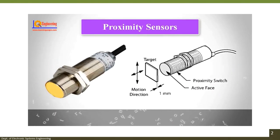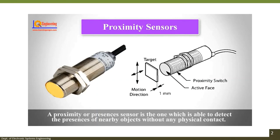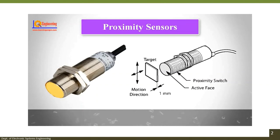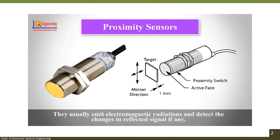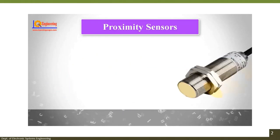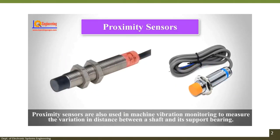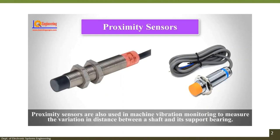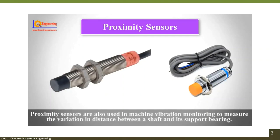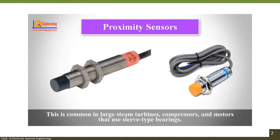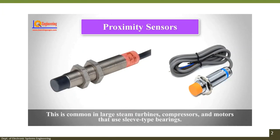A proximity sensor is able to detect the presence of nearby objects without any physical contact, by emitting electromagnetic radiation and detecting changes in the reflected signal. Proximity sensors are also used in machine vibration monitoring to measure the variation in distance between a shaft and its support bearing, common in large steam turbines, compressors, and motors using sleeve-type bearings.